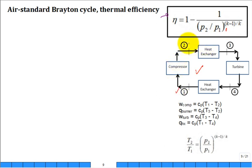State 1 is the inlet to the compressor, 2 is the outlet of the compressor, state 3 is the inlet to the turbine, and 4 is the outlet. We have to know the Q's and the W's, the work, and likewise...